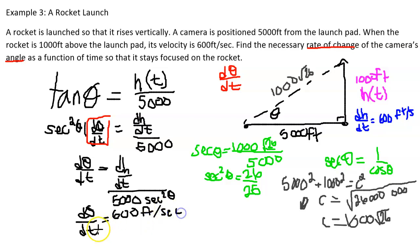Divided by 5000 times secant squared, which is 26 over 25.